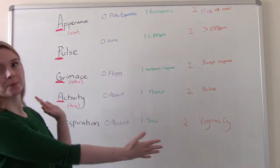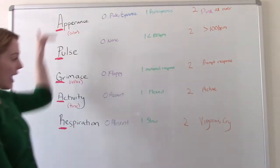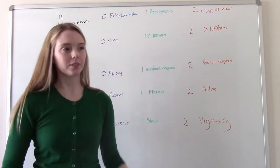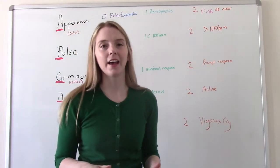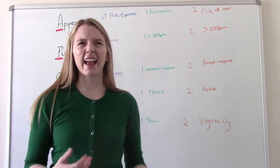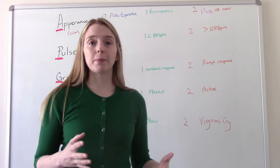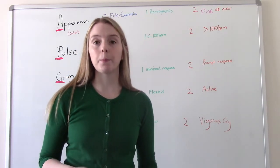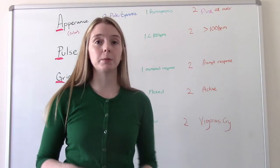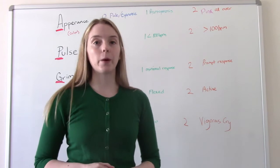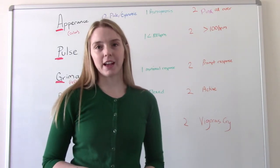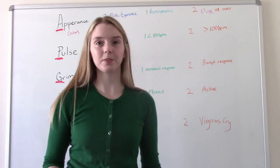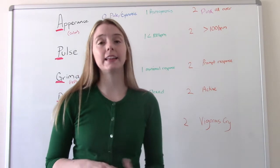As you can see on the chart behind me, it's zero, one, or two, and there are five categories, so the maximum score you can get is a ten. It's not normal to get a ten — very rarely do babies get a ten and that's totally fine. The normal APGAR scores for healthy babies with no complications are eight at one minute of life and nine at five minutes of life. We do want them to get above a seven by at least five minutes of life.